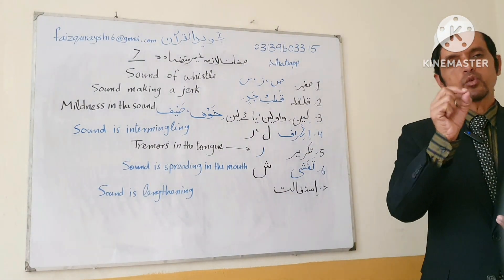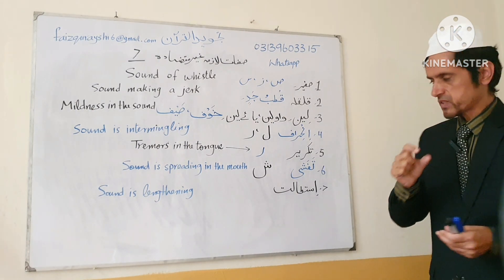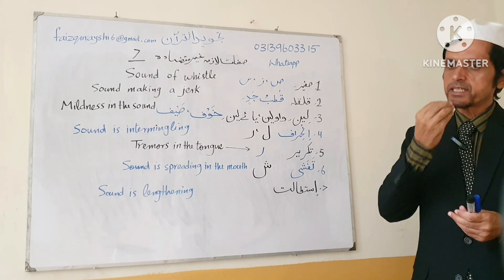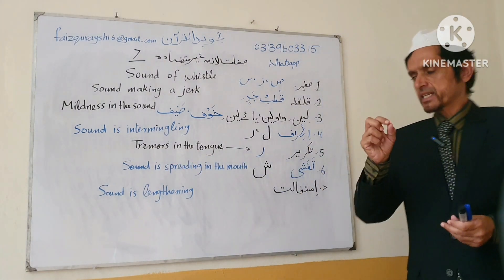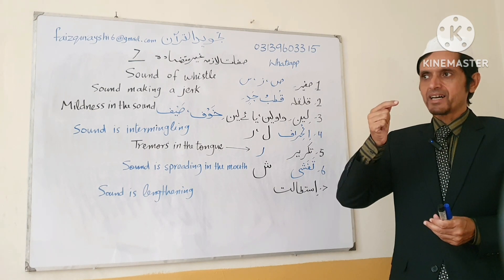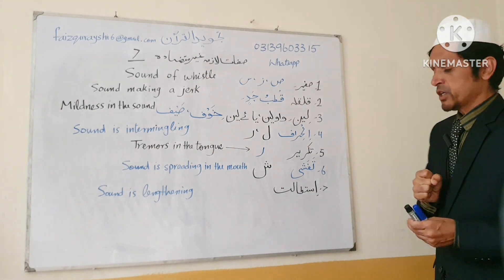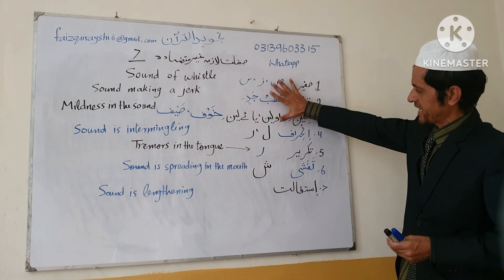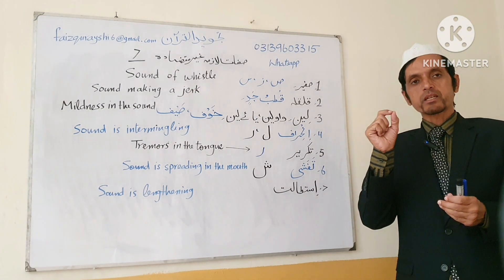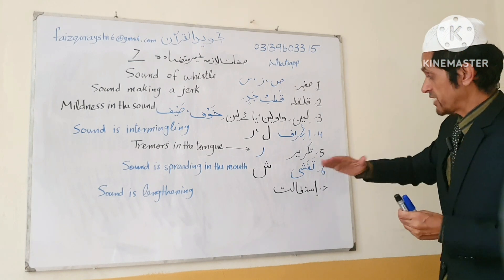Number five is Takrir. Takrir is found only in one letter — Ra. Takrir means tremors. When we articulate Ra, a sort of tremors is created in our tongue. For example: Ar-Rahman, Ar-Rahim — you can hear the tremors. However, this characteristic is found in Ra but you have to avoid this tremor. In other characteristics you have to express them, but in Ra you have to avoid the Takrir. You should not say 'Ar-r-r-rahman' — you will say 'Ar-Rahman, Ar-Rahim' — avoid the tremor.